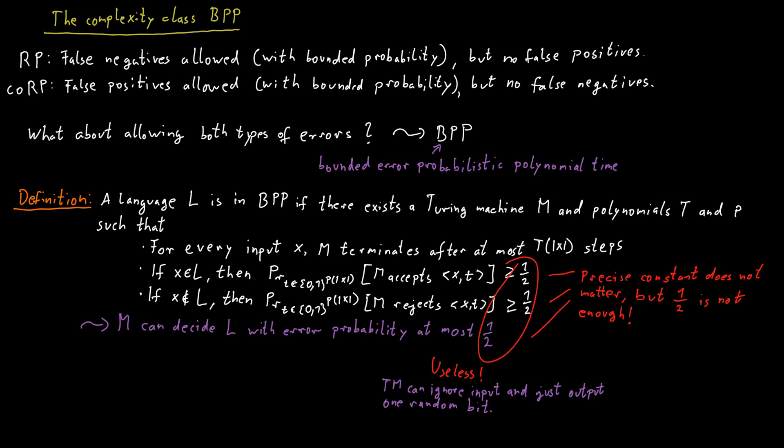And it also satisfies the other conditions now, because if a word is in the language, we accept with probability one-half, because we always accept with probability one-half. And if a word is not in the language, we reject with a probability of one-half.